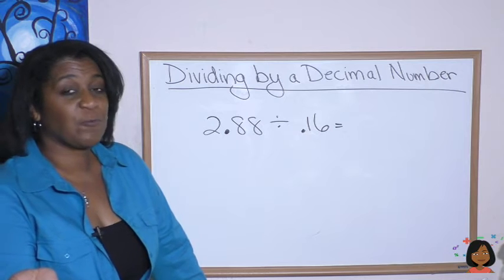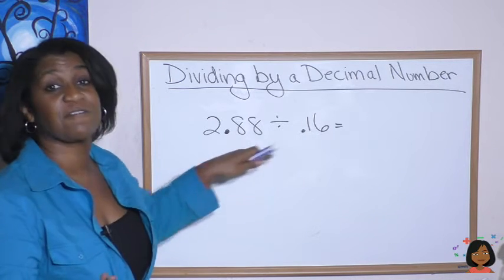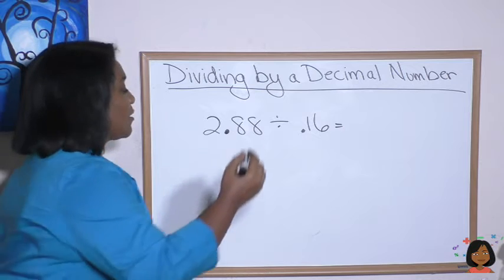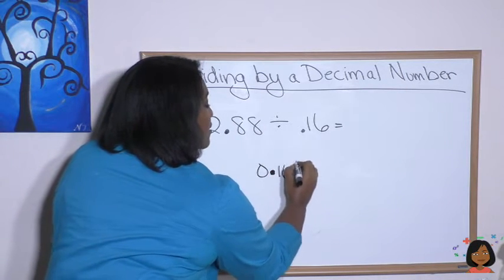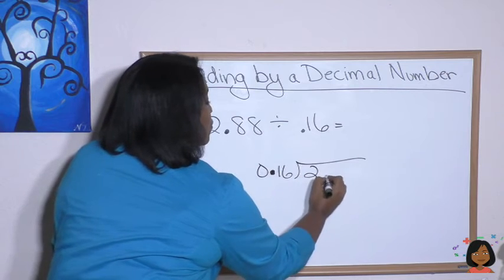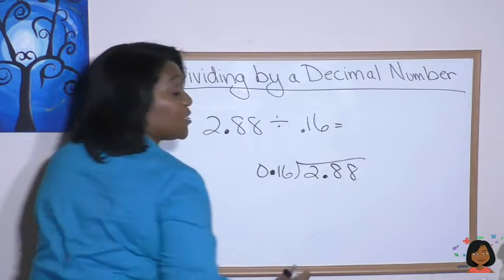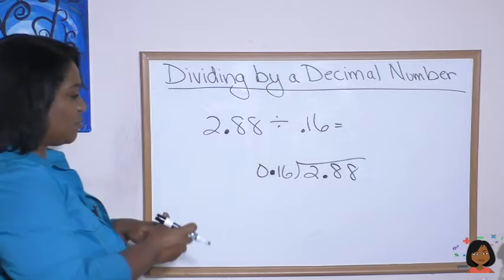What happens if we have decimals in both the divisor and the dividend? Take a look. Let's set it up like our division problem. 0.16 into 2.88. Step one, we've got to clear that decimal. So we're going to move it two places to the right.